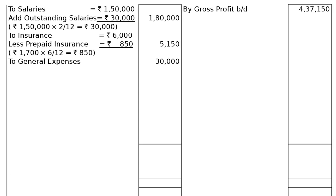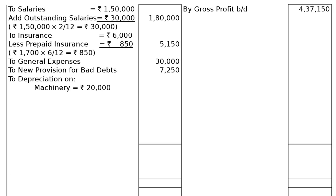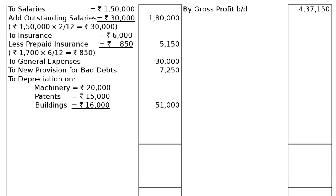Next one is to general expenses Rs. 30,000. To new provision for bad debts Rs. 7,250. Then to depreciation on machinery — machinery is Rs. 20,000. As per adjustment 3, depreciate machinery by 10%, patents by 20%, building by 5%. Hence, 10% of Rs. 2,00,000 on machinery is Rs. 20,000. Patents at 20% is Rs. 15,000. And building is Rs. 16,000, which I will explain later. Hence, the total depreciation in the final column will be Rs. 51,000.